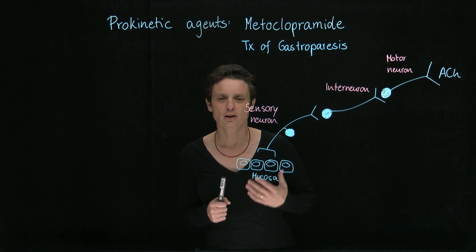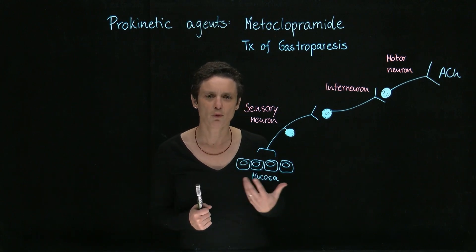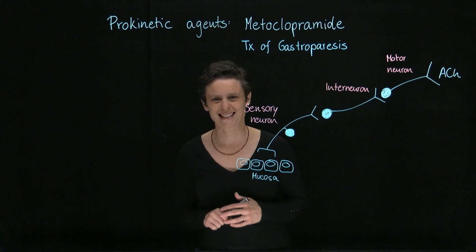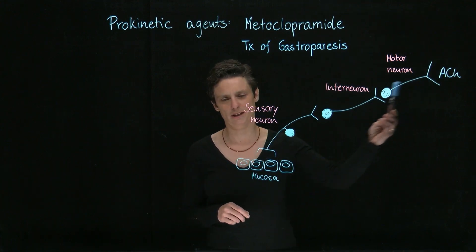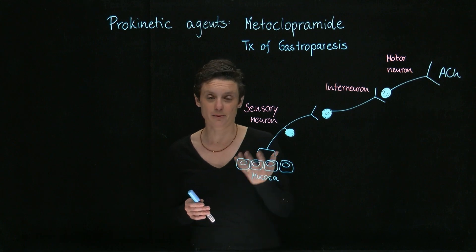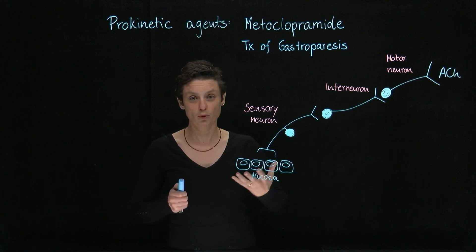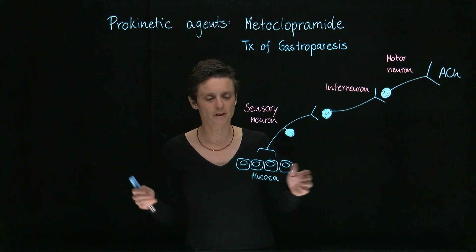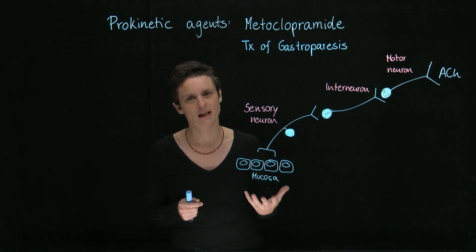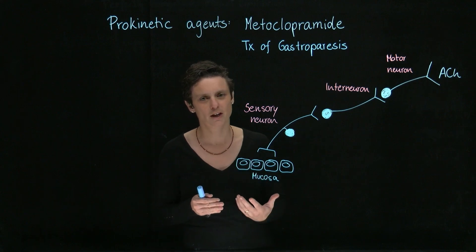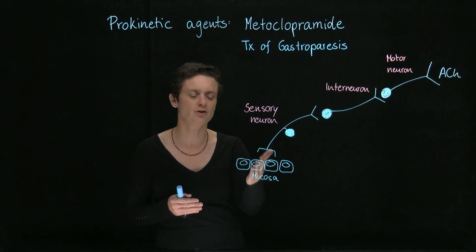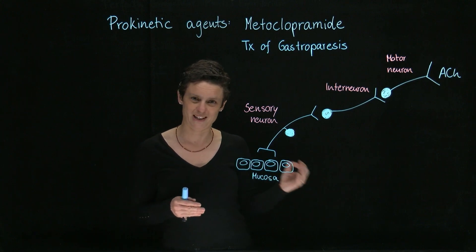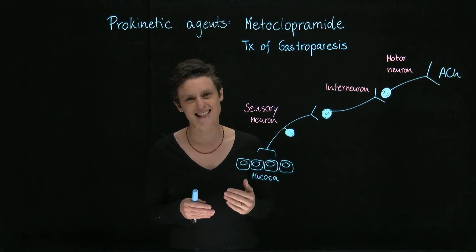Let's discuss how metoclopramide works. First of all, what triggers more motility? One major neurotransmitter that stimulates GI motility is acetylcholine. So if there is some sort of a stretch — if there's a bolus in the stomach moving forward — it will be picked up by the so-called enteric nervous system. We have a lot of nerves in our GI tract.